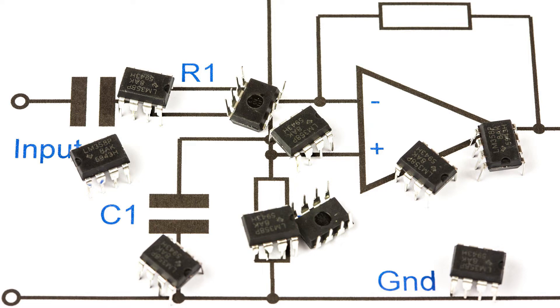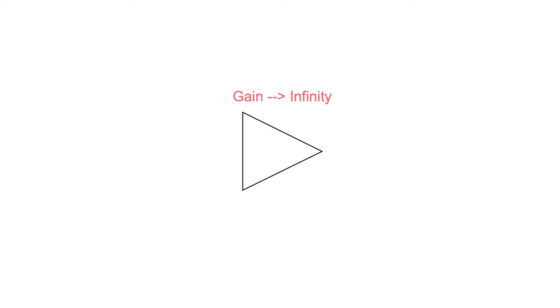So what is an op-amp? Its circuit symbol is generally depicted as a triangle, as we see here. Probably its most notable attribute is that it has a very high gain. It can be considered as infinite for most applications, although in reality it may be anywhere from 10,000 upwards.